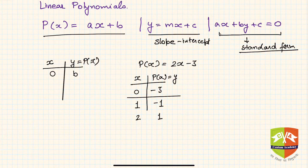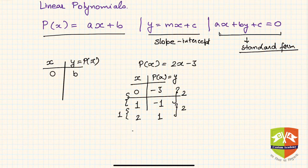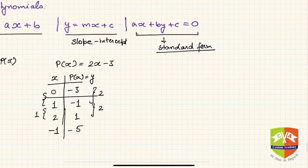If you see, for every change of 1 unit in x we are getting a 2-unit change in y, or p(x). This is the peculiar behavior of a linear polynomial. You can try some negative values as well. If x = −1, then p(x) = −5.